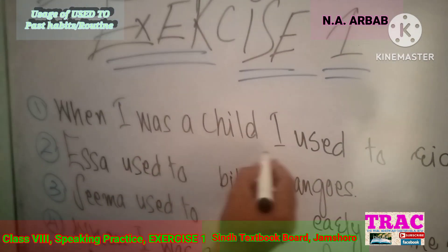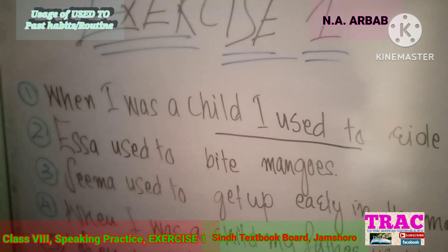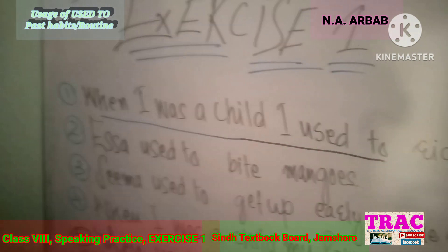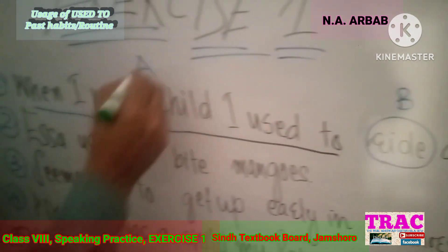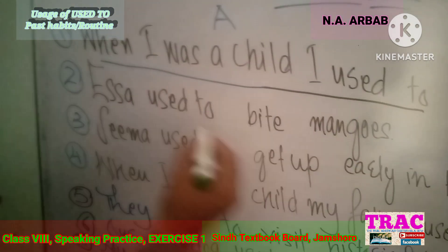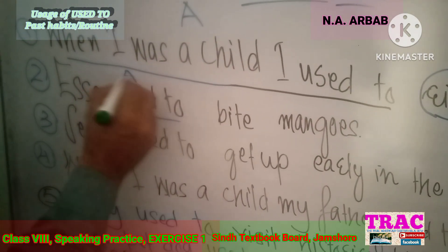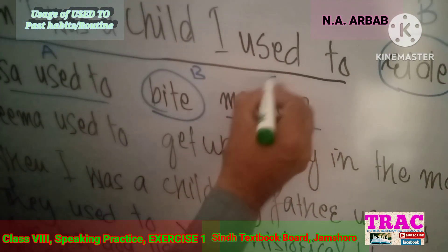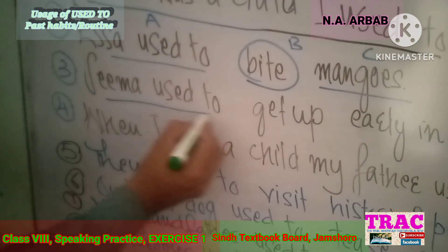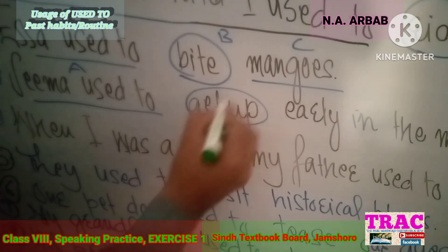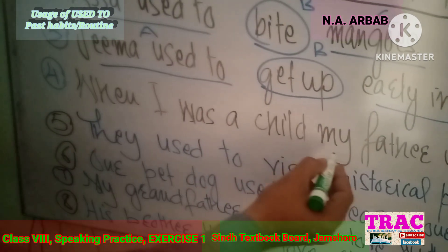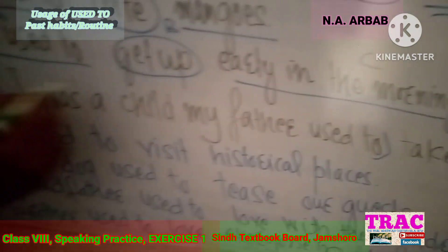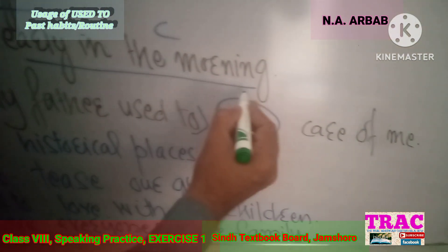Number one says: 'When I was a child, I used to hang out.' That is Part A, Part B, and Part C. Number two: 'Isa used to bite mango' — that is A; 'Isa used to bite' — that is B; and that is C. Number three: 'Seema used to...' — Part A; 'get up early in the morning' — Part B; 'early in the morning' — Part C. Number four: 'When I was a child, my father used to...' — Part A; 'I used to take' — Part B; 'care of me' — Part C.